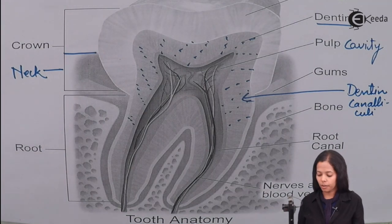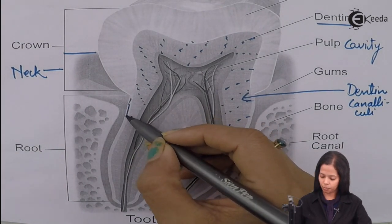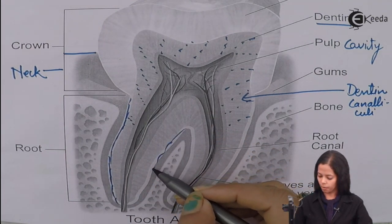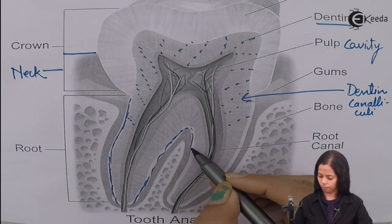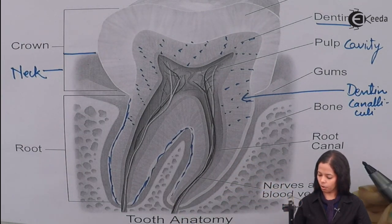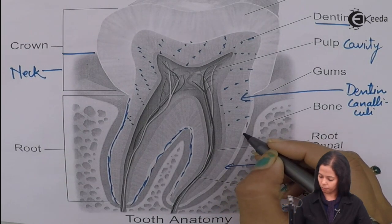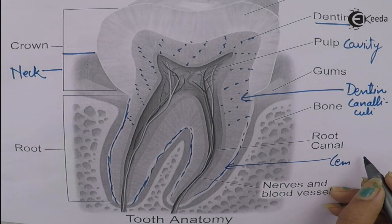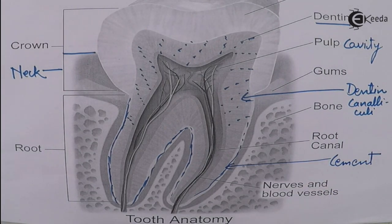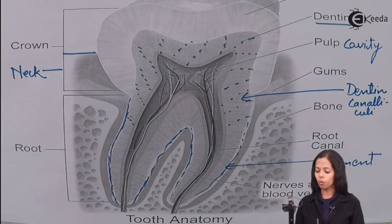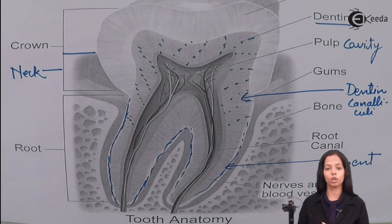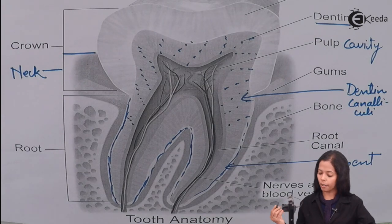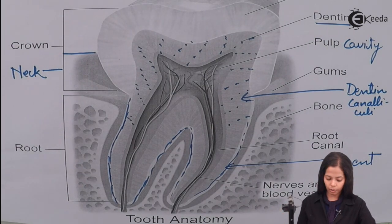In the root, the dentine is surrounded by a layer called the cement of the root. The cement of the root is connected to the jaw bone with the help of a ligament, and that ligament is called the periodontal ligament.